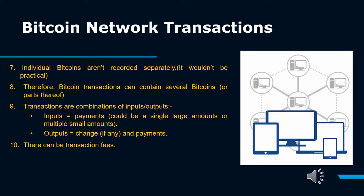UTXOs — unspent transaction outputs. A person's spendable Bitcoins are stored in data records known as unspent transaction outputs, or UTXOs. A single UTXO can contain any amount, but unlike a bank account balance, which is a single amount, a user's Bitcoin balance is like having cash in different rooms throughout the house. The sum of all those bills is the cash on hand. In the case of Bitcoin, the sum of all UTXOs for a given user is that person's coin balance.